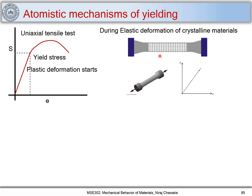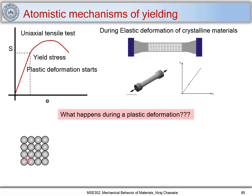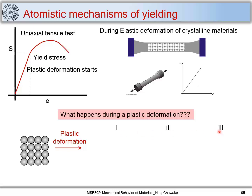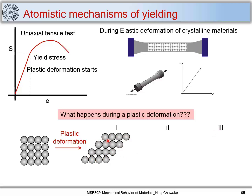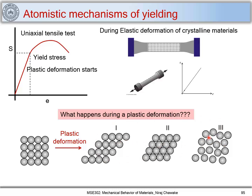Now the question is: what happens during plastic deformation? Plastic deformation involves a permanent shape change. There can be three scenarios by which a material shape change can occur. In the first scenario you get a shape change while retaining the crystal structure; in the second, the crystal structure changes; and in the third, atoms are distributed in an amorphous fashion.